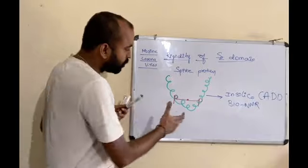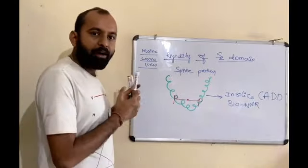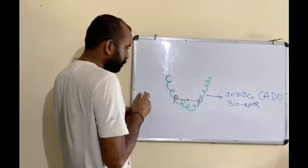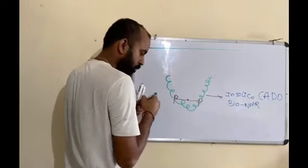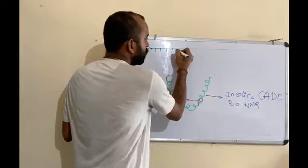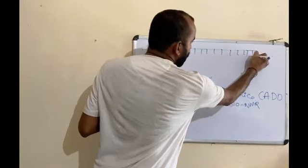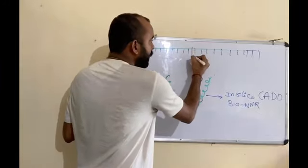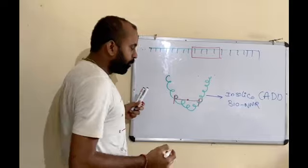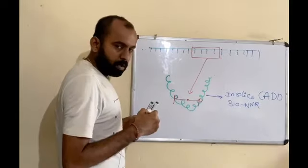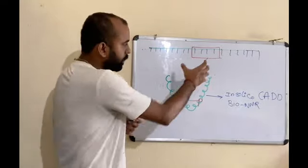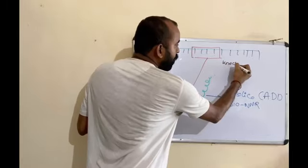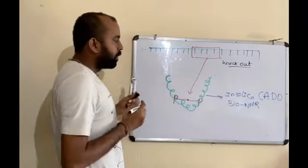Once you identify this receptor binding domain, we already have the genome sequence. In the genome sequence we have various nucleotides, and we need to identify the portion of nucleotides — the portion of the gene — which are responsible for expression of your proline components. By identifying this gene sequence, you perform a method called knockout.